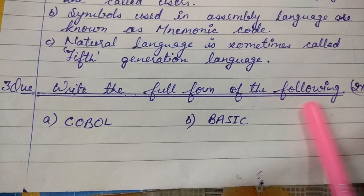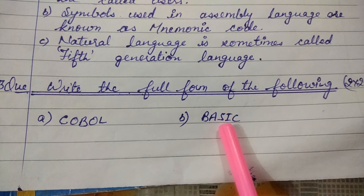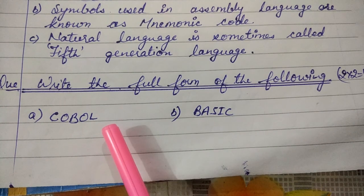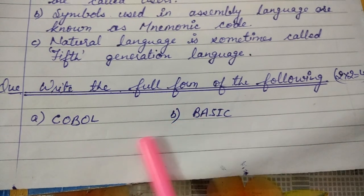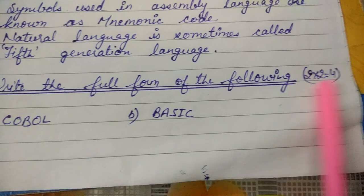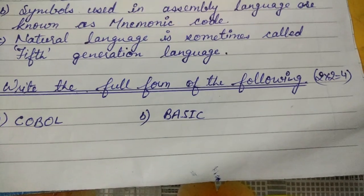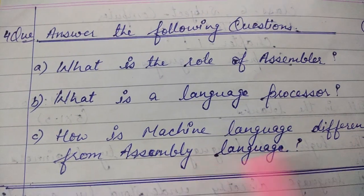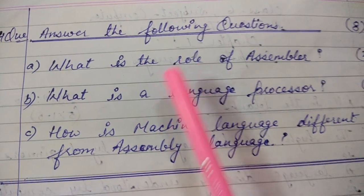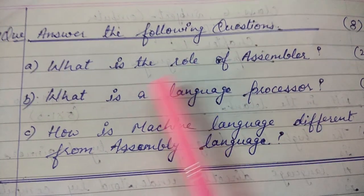Total three true/false questions, each carrying one mark, for a total of three marks. Question number three: write the full form of the following. There are two — number one: COBOL, and number two: BASIC. Each carries two marks, for a total of four marks.